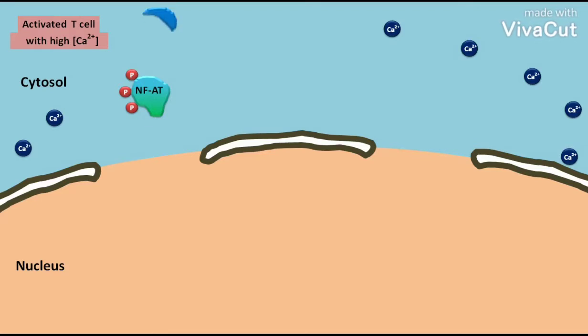This dephosphorylation blocks the nuclear export signal and exposes a nuclear import signal on NFAT. The NFAT and calcineurin complex is then imported into the nucleus.